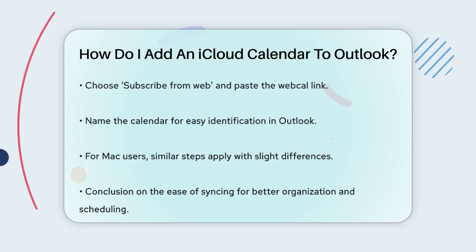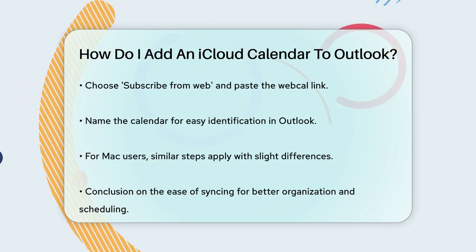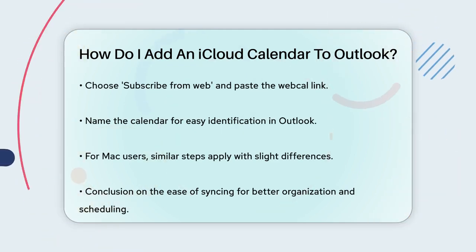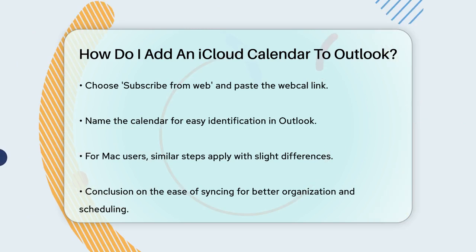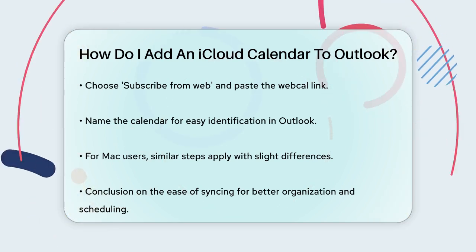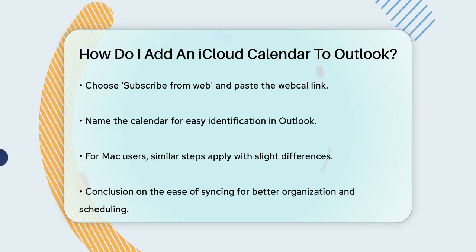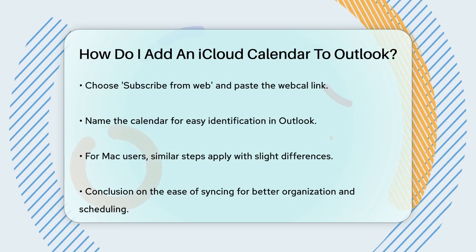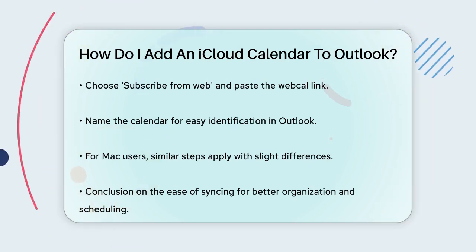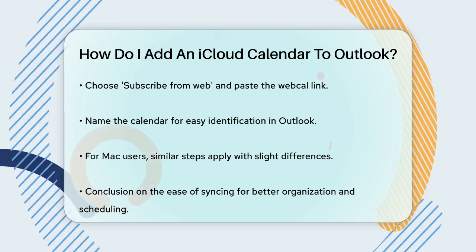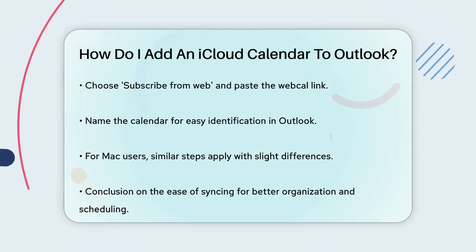If you're using Outlook on a Mac, the process is similar but slightly different. You'll need to copy the WebCal link from iCloud and then go to the Outlook calendar page. Select Add Calendar and choose Subscribe from Web. Paste the link and follow the prompts to complete the sync.